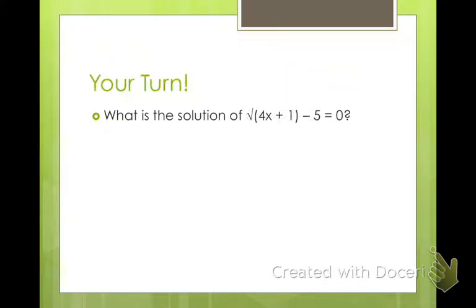Why don't you go ahead and try this one: square root of 4x plus 1 minus 5 equals 0. Go ahead and pause the video and try this one on your own first.